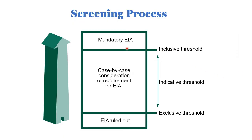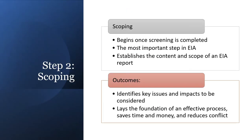For example, defense projects are excluded from EIA — no EIA is needed for such projects. Case-by-case examination is also used. Mandatory EA applies to certain notified projects — approximately 30 kinds of projects in India require EIA. Scoping begins once screening is completed. Scoping is only for projects that need full EIA and is the most important step. It establishes the content and scope of an EIA report.